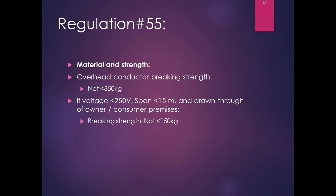Regulation 55 is regarding material and strength. Overhead conductor breaking strength shall not be less than 350 kg. However, if your voltage is not exceeding 250 volt, the span is not exceeding 15 meters, and the conductor is drawn through the premises of either the owner or consumer, you can use an overhead conductor whose breaking strength is not less than 150 kg. So if your voltage is low, your span is defined, and the conductor is laid either on the owner's or consumer's premises, you can use the lower breaking strength.